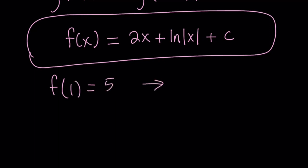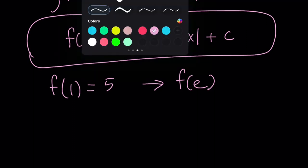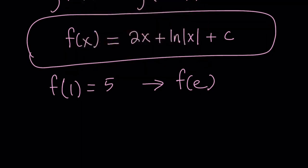From here we're supposed to find f of e. How do you find f of e? You can replace x with e. But why were we given f of 1 equals 5? That was given as an initial condition so that we can plug it in and find the value of c.